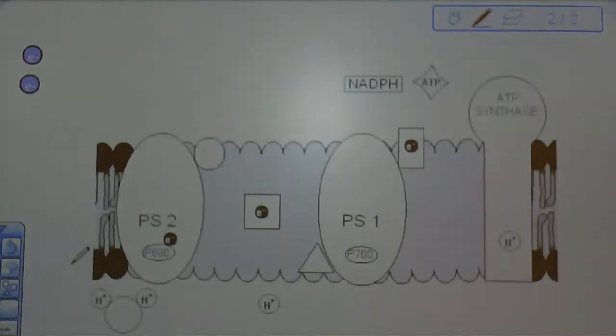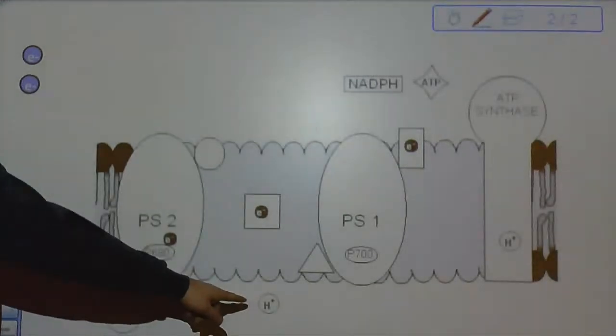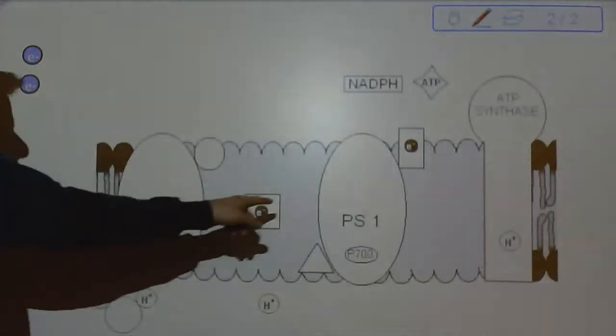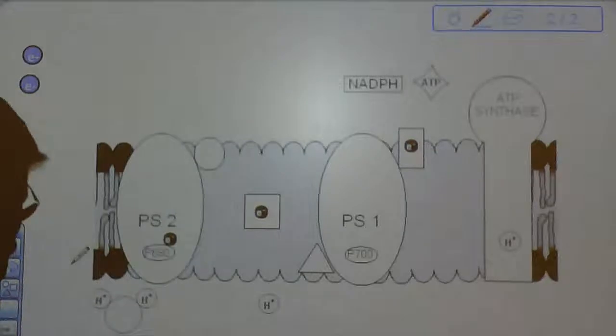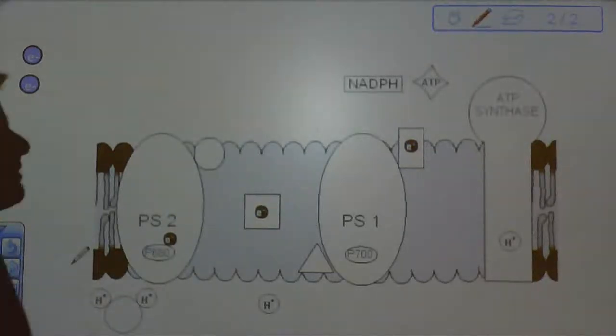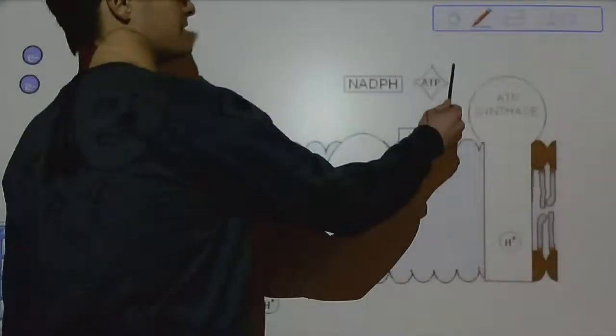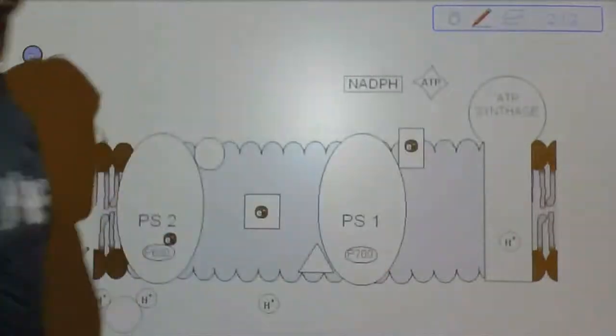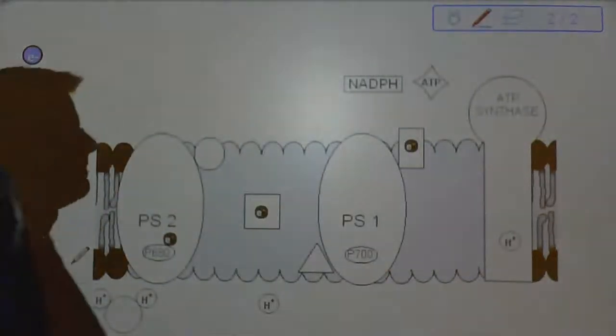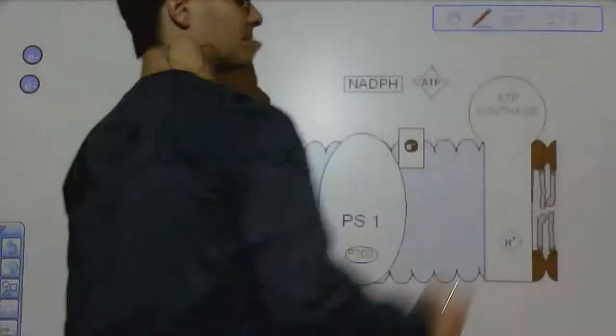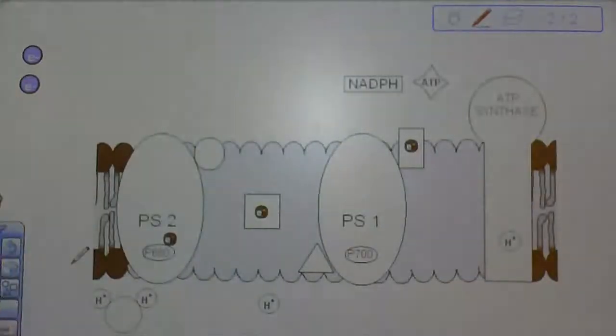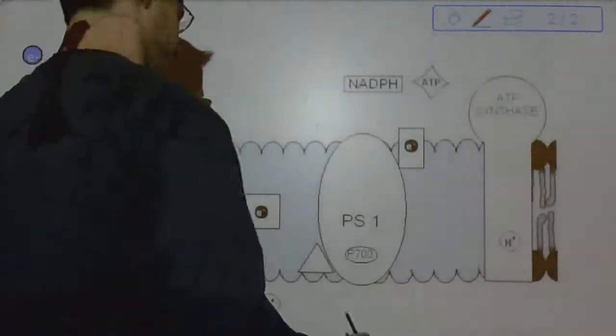There's water down here. There's a hydrogen ion. These little black dots are electrons. You may be able to see the little E inside of them. Here are our two products of the light reactions, NADPH and ATP. And here is an enzyme that is creating ATP. So it pretty much tells you what it does, ATP synthase.